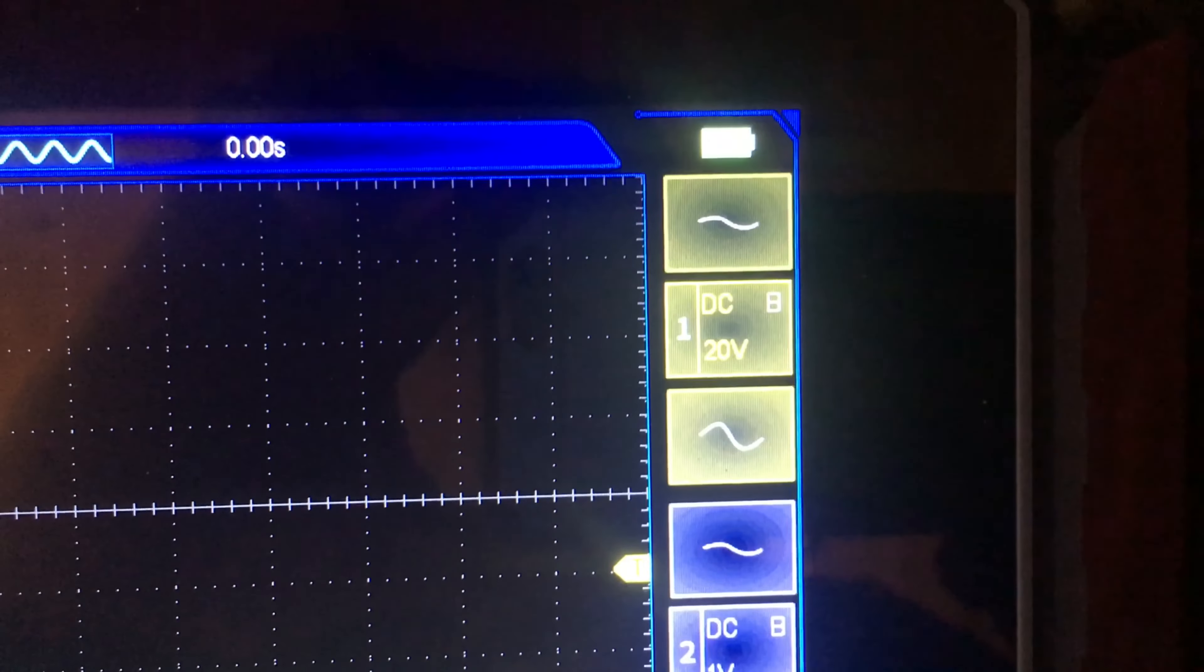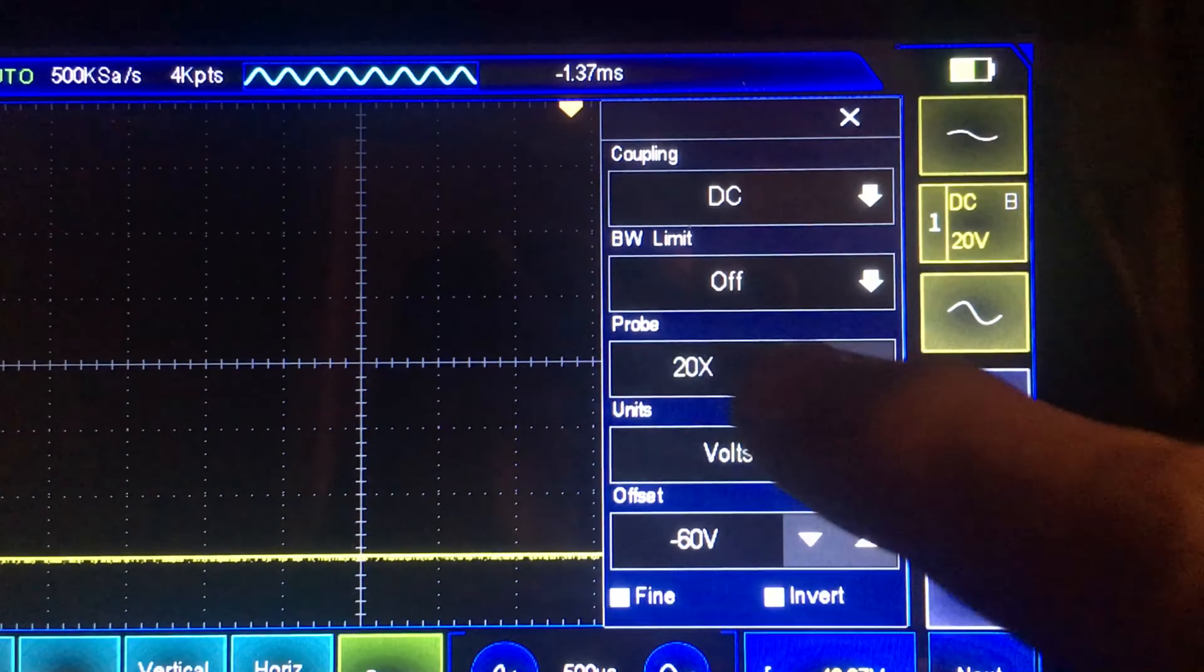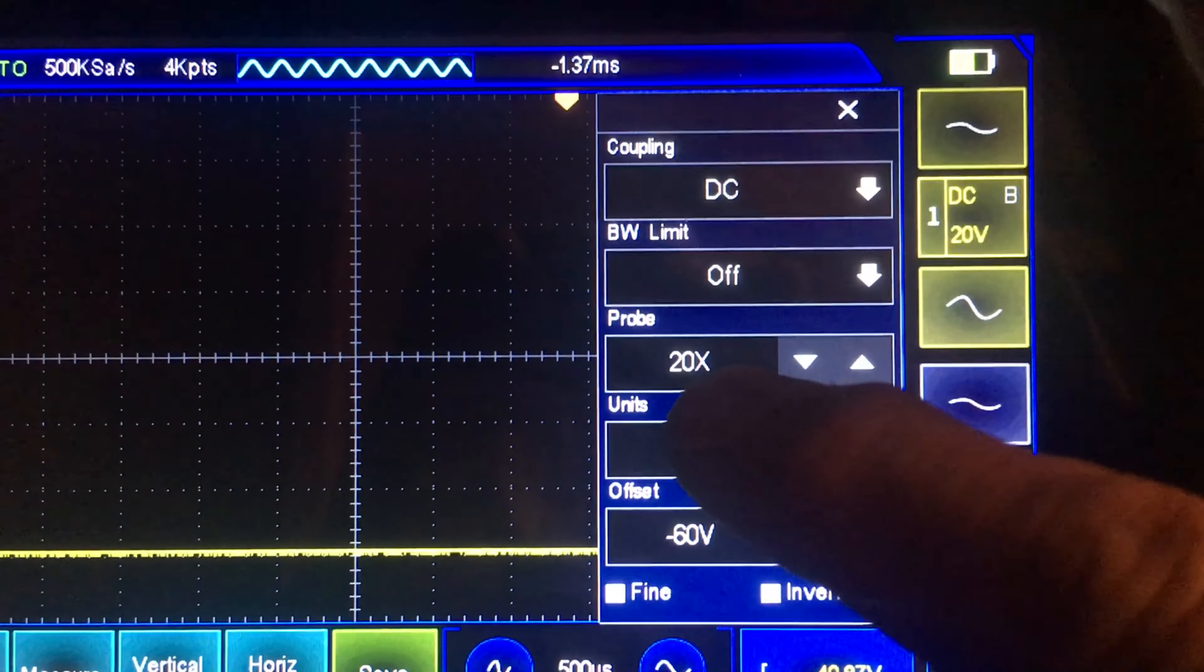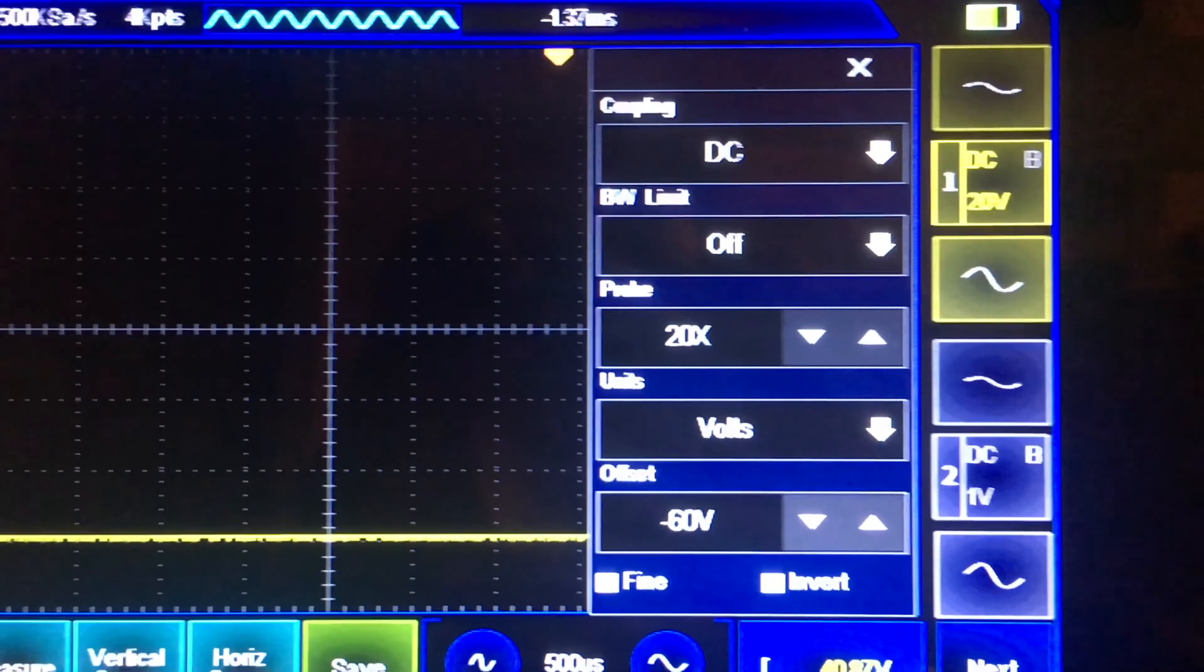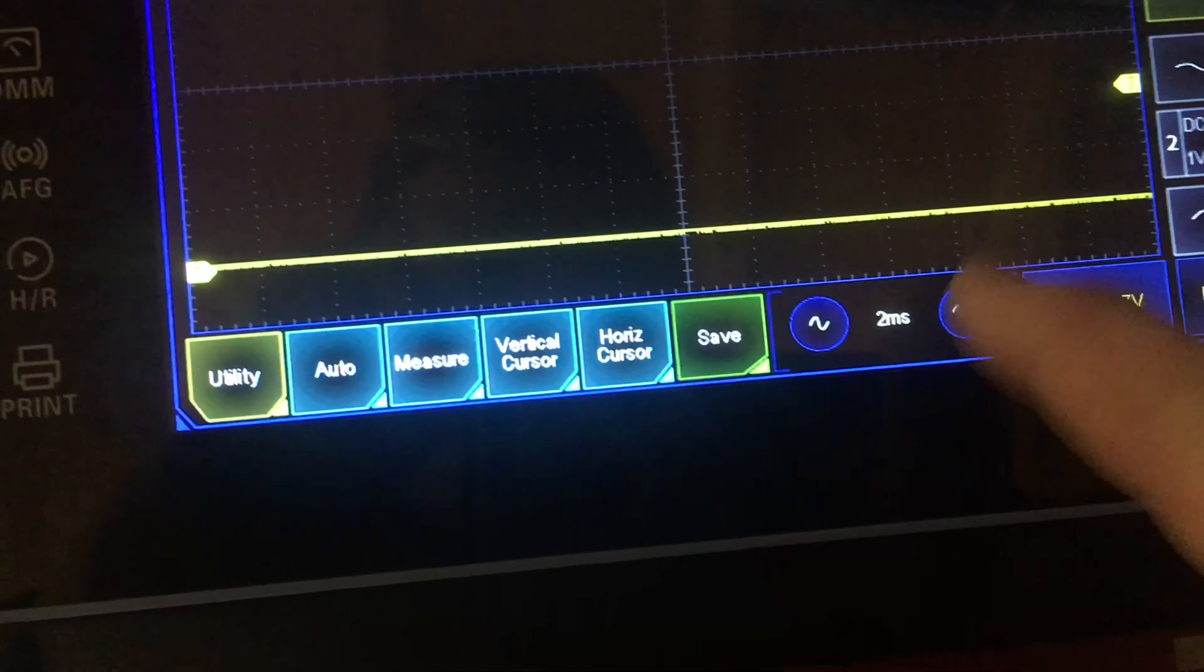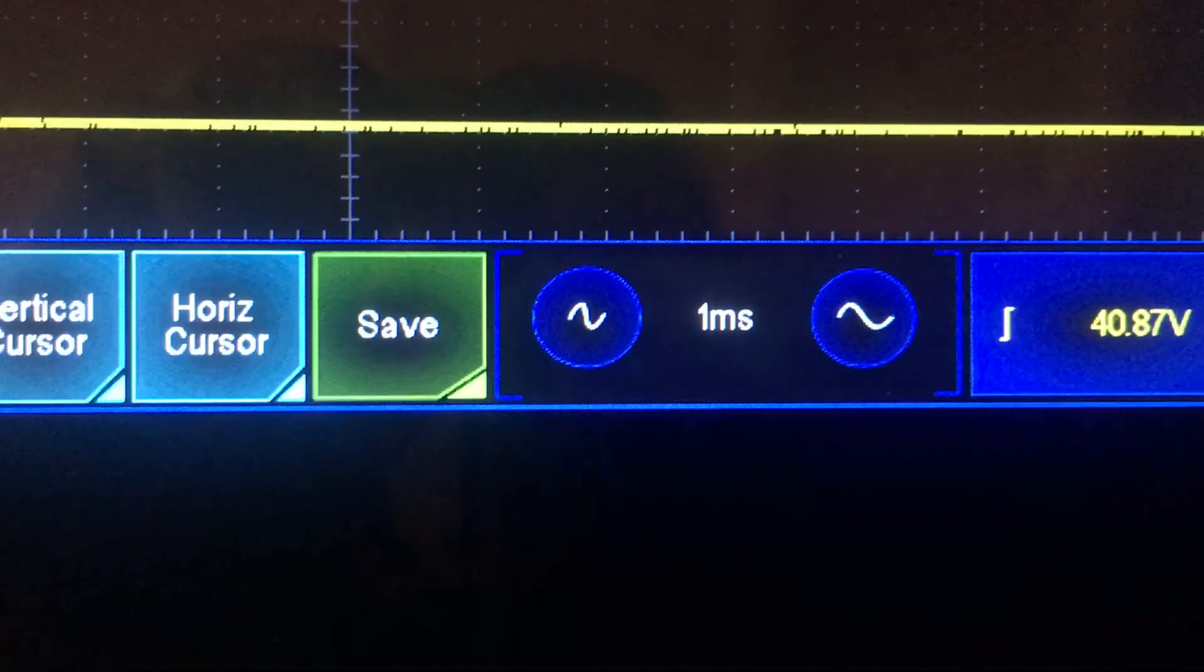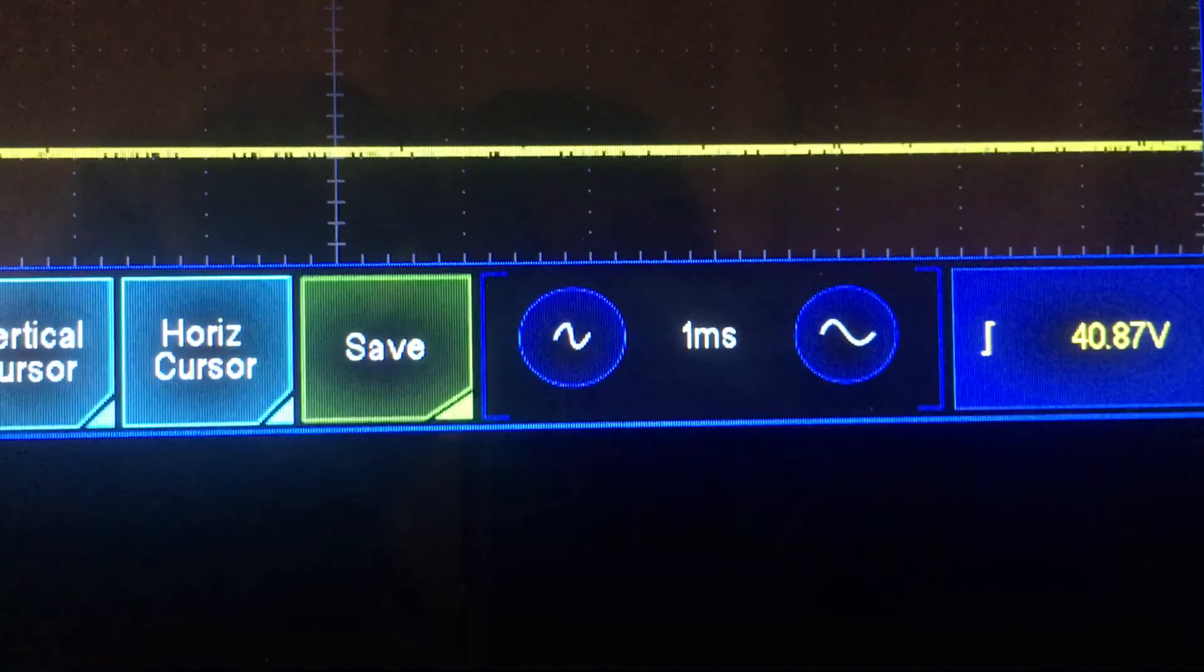Some guys are asking, channel one is set for 20 volts per division on the voltage scaling there. Go to the channel settings here, make sure your probe is selected to the 20 times because you're using the attenuator. I'm just going to set, as per the recommendations on the manual, 1 millisecond per division.